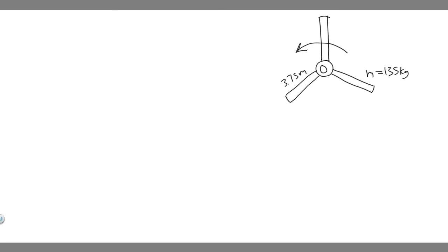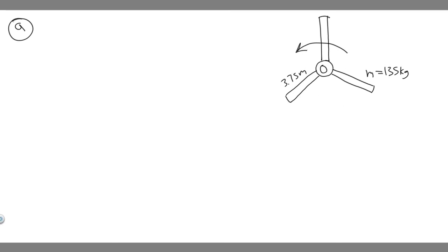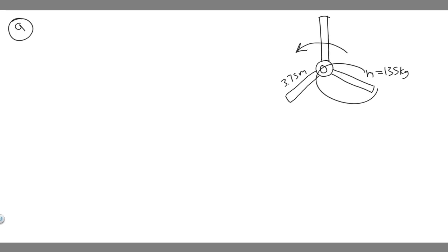Let's go ahead and solve this problem. I went ahead and redrew the diagram, so this is going to be our diagram. Let's start with Part A. We want to calculate the moment of inertia of the three rotor blades. The way you want to think about this is as three separate objects — imagine all of these rods are just three separate things, each rotating around the center. Think about each one separately, calculate the moment of inertia of each and then add them up.